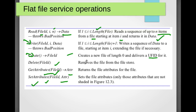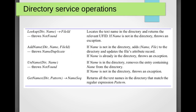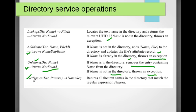Directory service interface operations include lookup, add name, unname, and get names. Lookup locates a text name in the directory and returns the UFID. Add name adds the name and file to the directory if the name does not exist, or throws an exception if it already exists. Unname removes an entry if the name exists, or throws an exception if it does not. Get names returns all text items in the directory matching a given regular expression pattern.